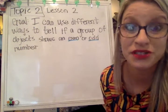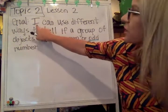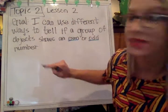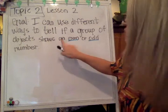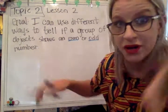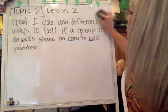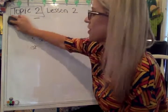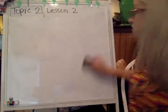Hi, we're on lesson number two from topic two. The goal of today is: I can use different ways to tell if a group of objects shows an even or an odd number. So we're continuing with even and odd. We're going to decide based on that number if it is even or if it is odd.